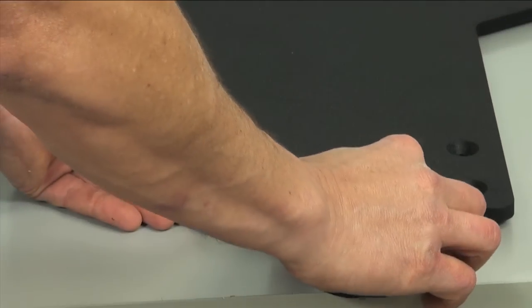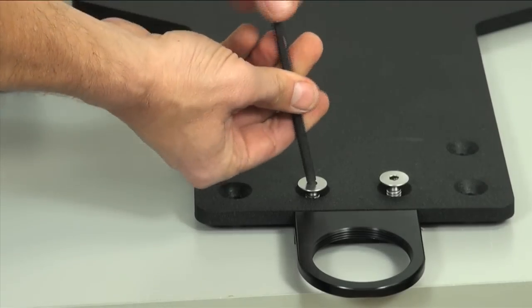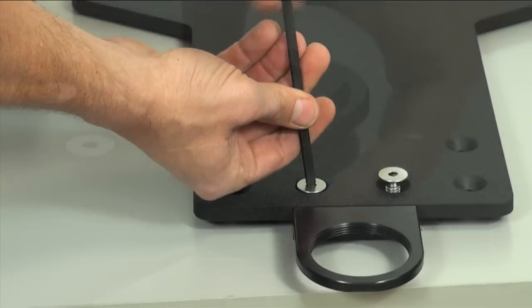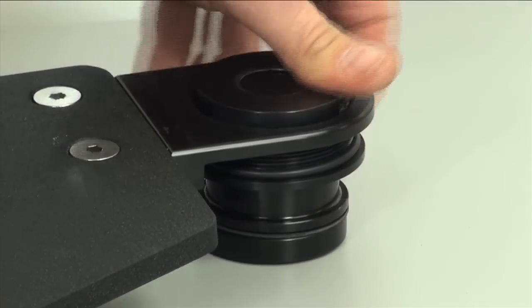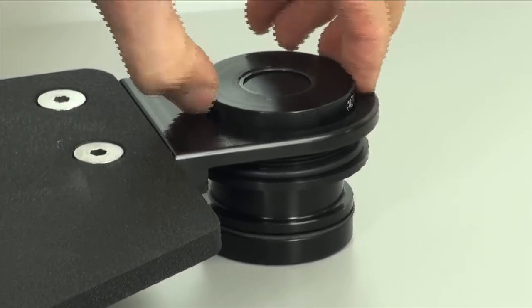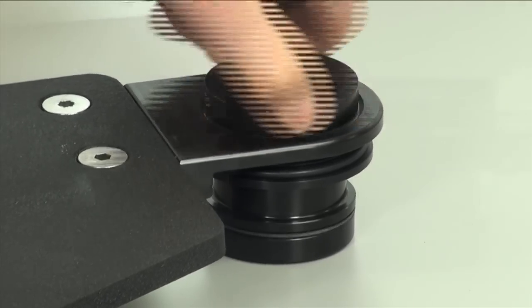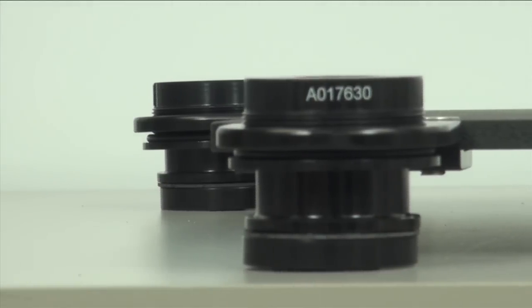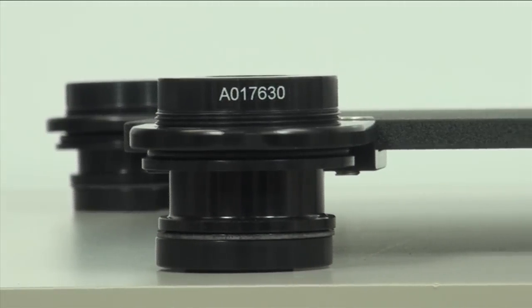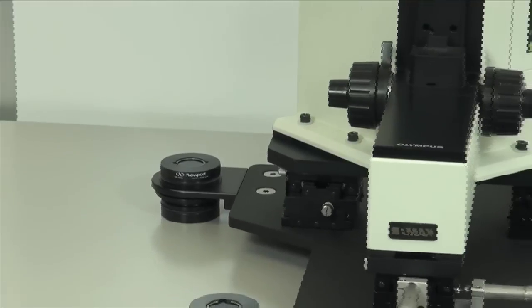First, remove the components from their packaging and bolt the mounting brackets to the base plate. Next, screw the IB bearings into the brackets completely and place the VIVE in the desired location. Finally, place your instrument onto the base plate and adjust the IB bearing at the lowest corner if necessary to level the platform.